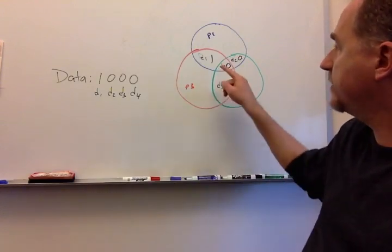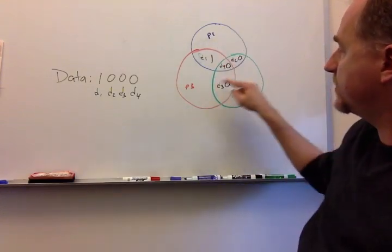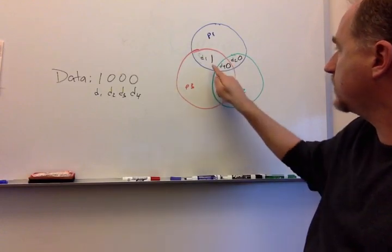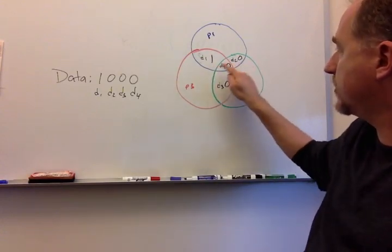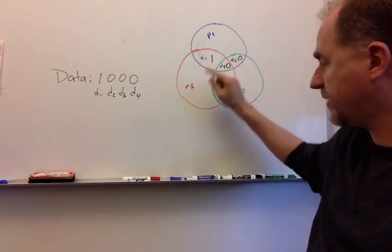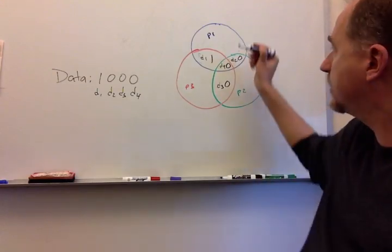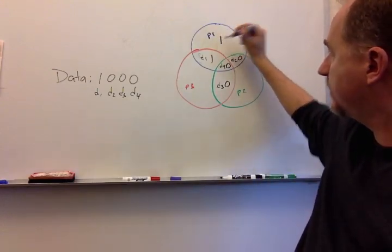So we need to figure out, for even parity, what parity bits to set in each one of these circles. Well, for parity bit one, there is a one, zero, zero. So there's one one, and we're doing even parity. So I need another one to make two ones. I'm going to add parity bit one up here.